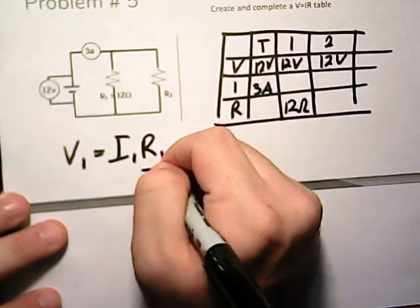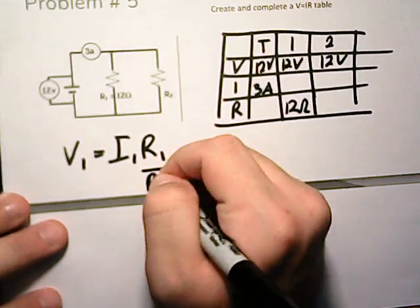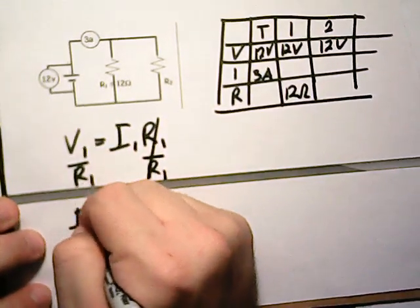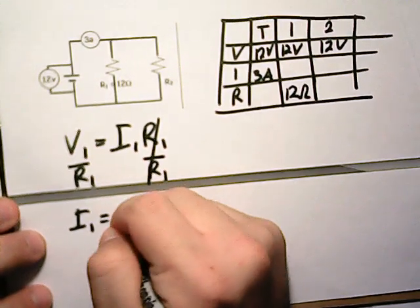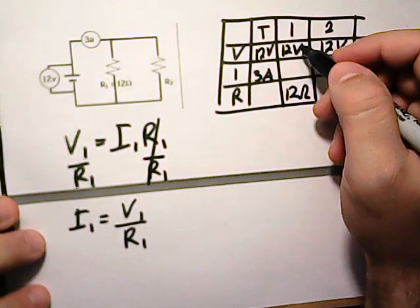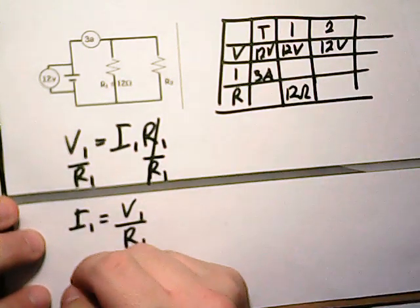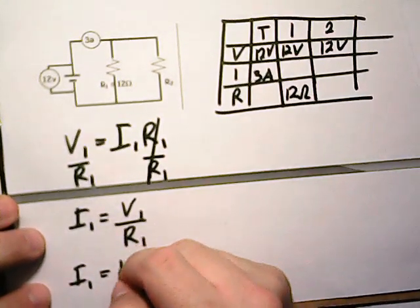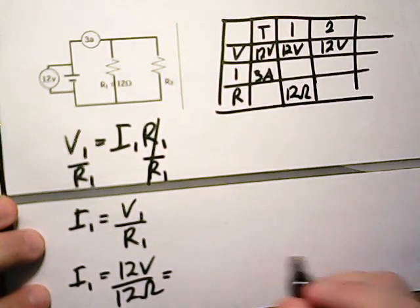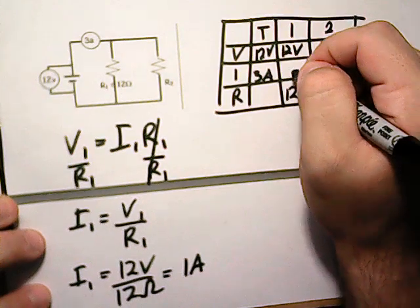So if we rearrange this equation, if we want to get I by itself, we're going to divide both sides by R1, so it goes away. We get I1 equals V1 over R1. We know V1 is 12 and R1 is 12, so I is going to be equal to 12 volts over 12 ohms, which is a current of 1 amp.